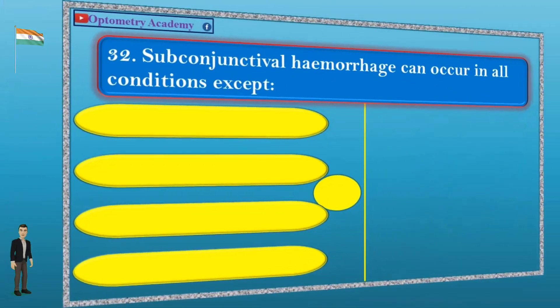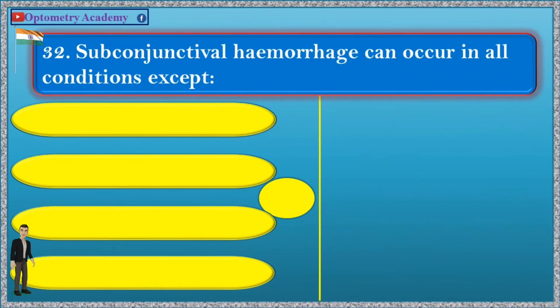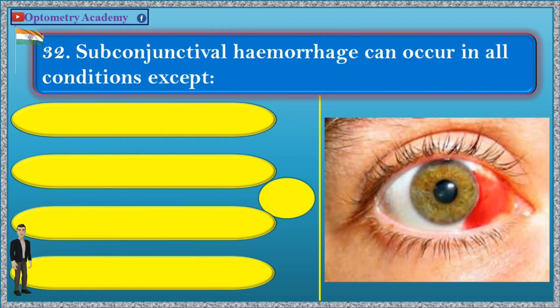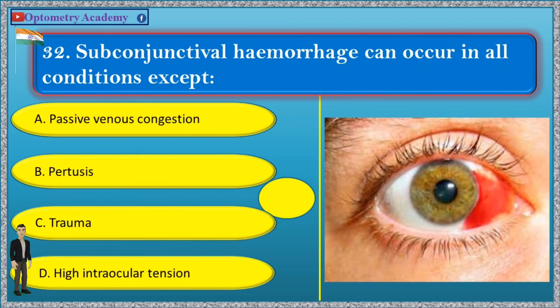Question 32. Subconjunctival hemorrhage can occur in all conditions EXCEPT: A. Passive venous congestion, B. Pertussis, C. Trauma, D. High intraocular tension.